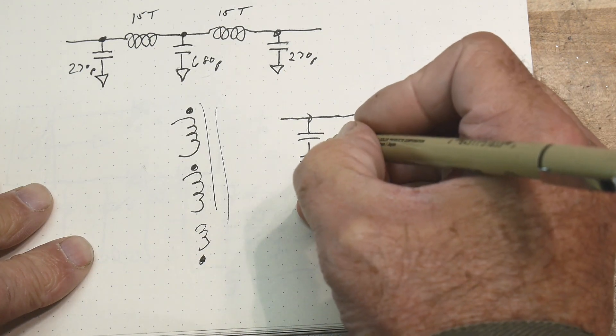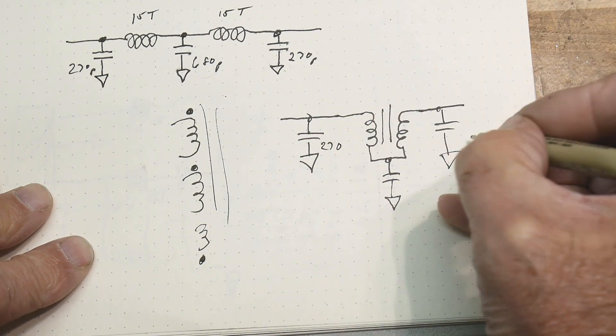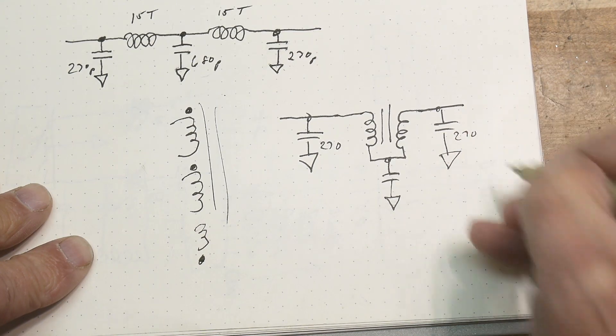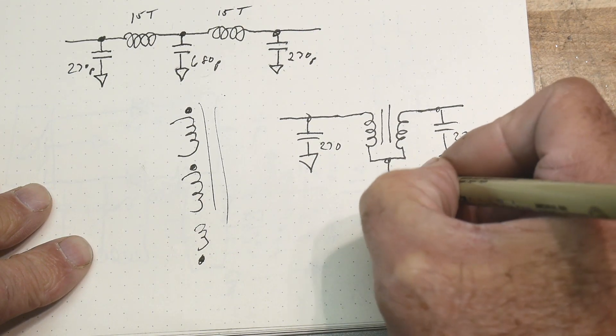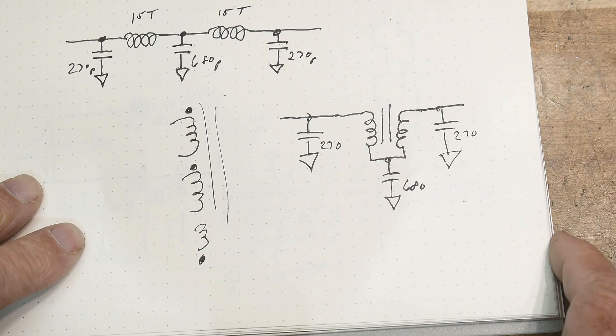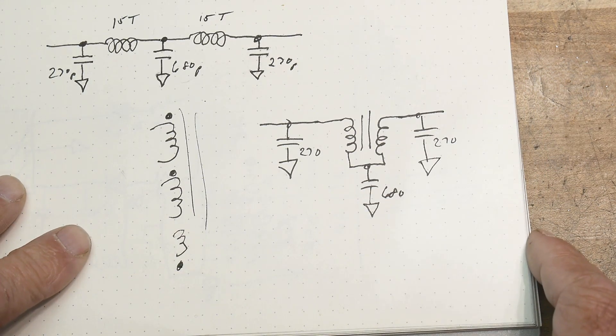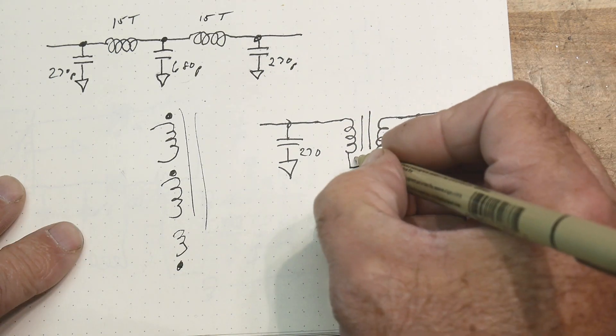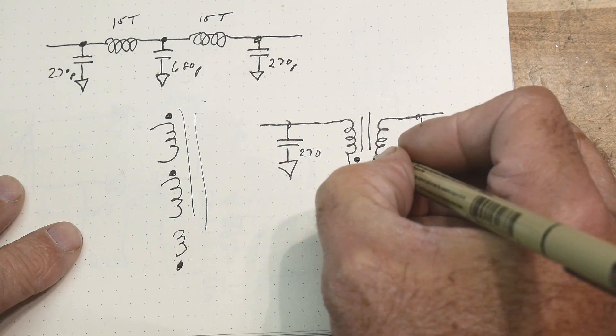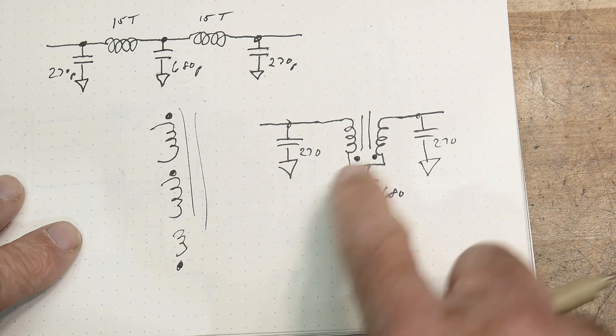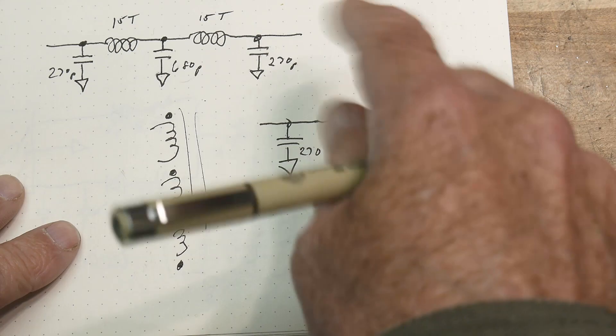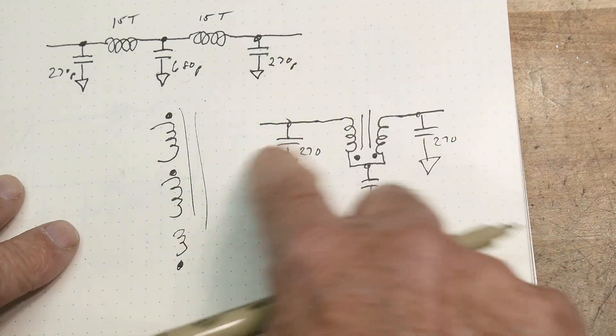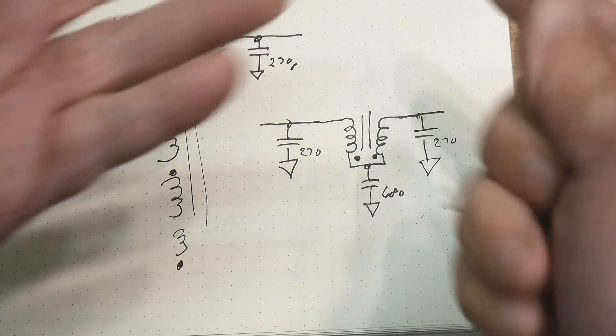And this is 270, this is 270, and this is 680. And our phasing is such that it's phased like this, I believe that's the right way to draw that. They're opposite, so they don't couple, they cancel each other out.